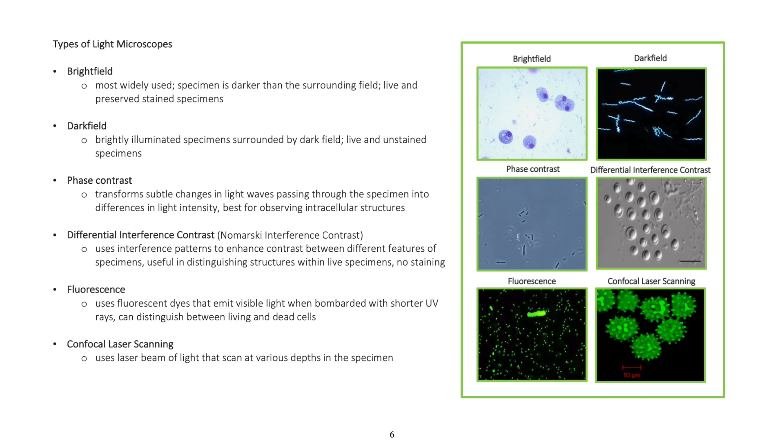Differential interference contrast, or Nomarski interference contrast, uses interference patterns to enhance contrast between different features of specimens. It's useful in distinguishing structures within live specimens without staining.